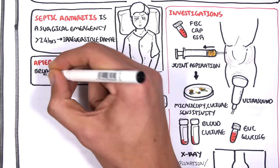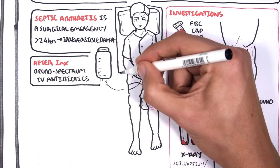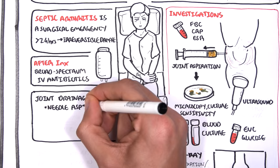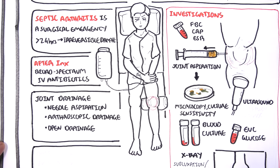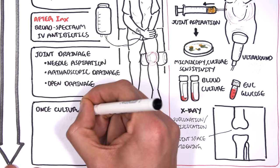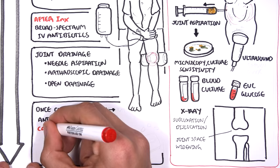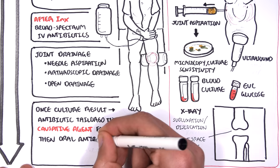After performing the investigations — notably cultures and joint aspiration — administration of broad-spectrum antibiotics is a priority. Surgical management is needed involving joint drainage, usually through joint aspiration, arthroscopic drainage, or open drainage. Once cultures have returned, antibiotics can be tailored towards the causative agent.